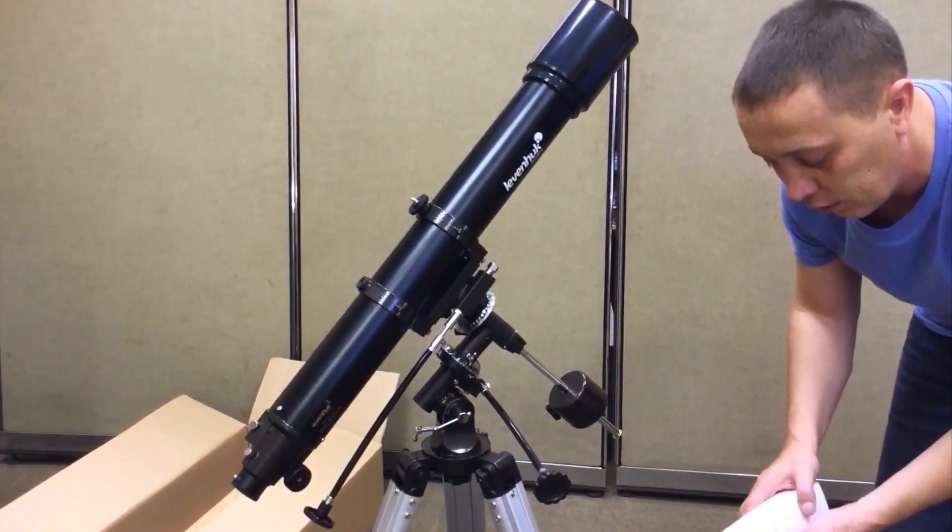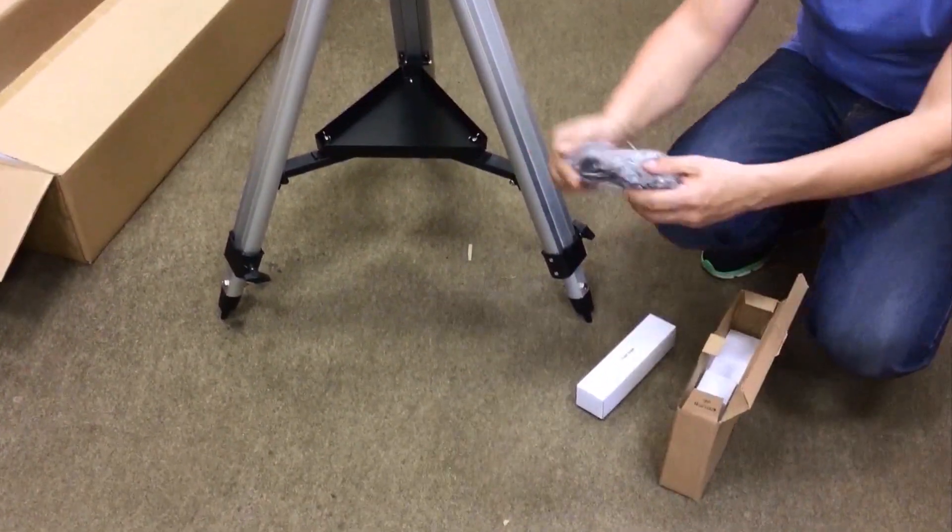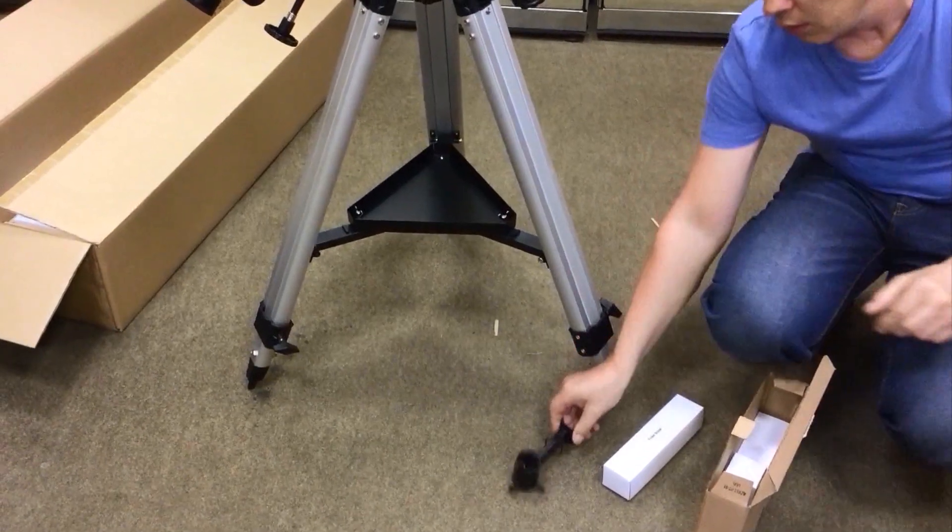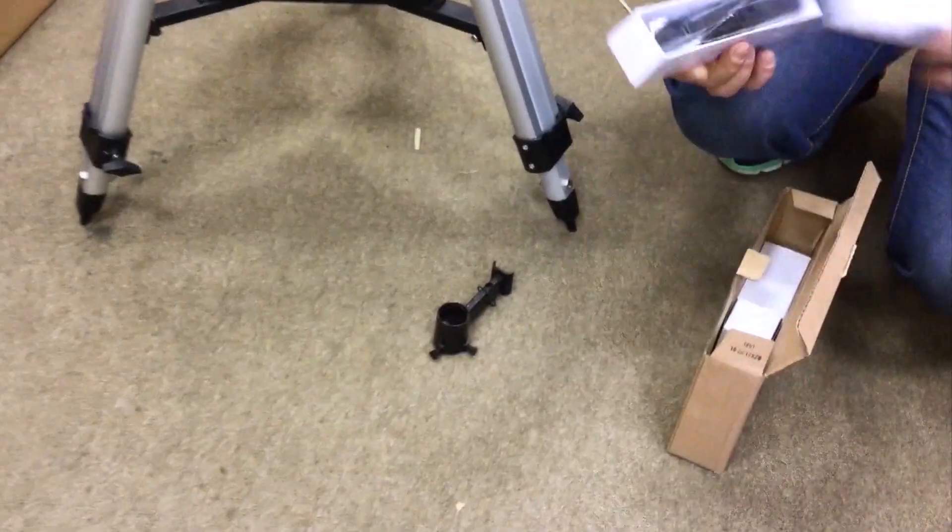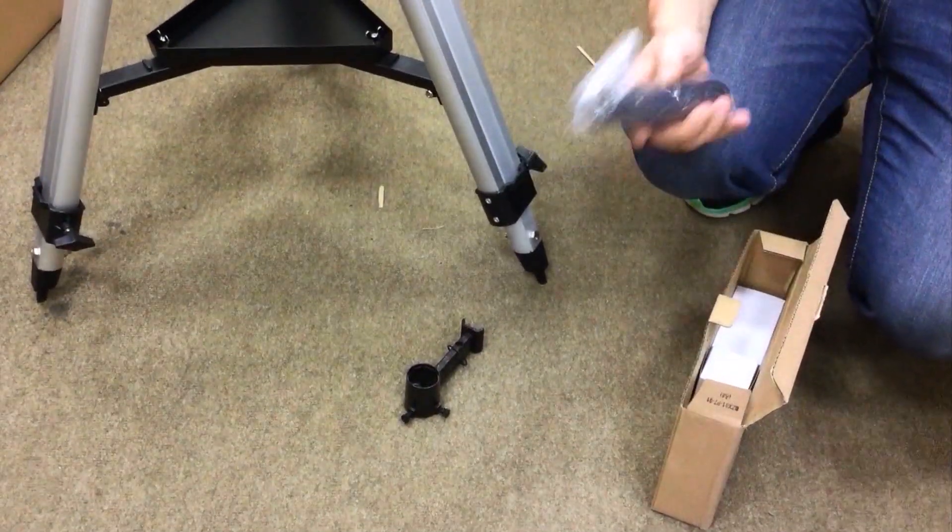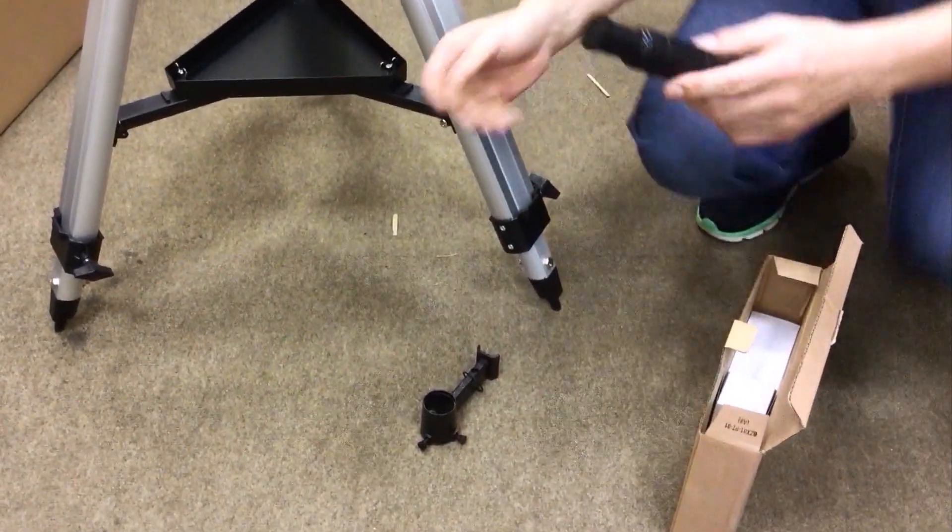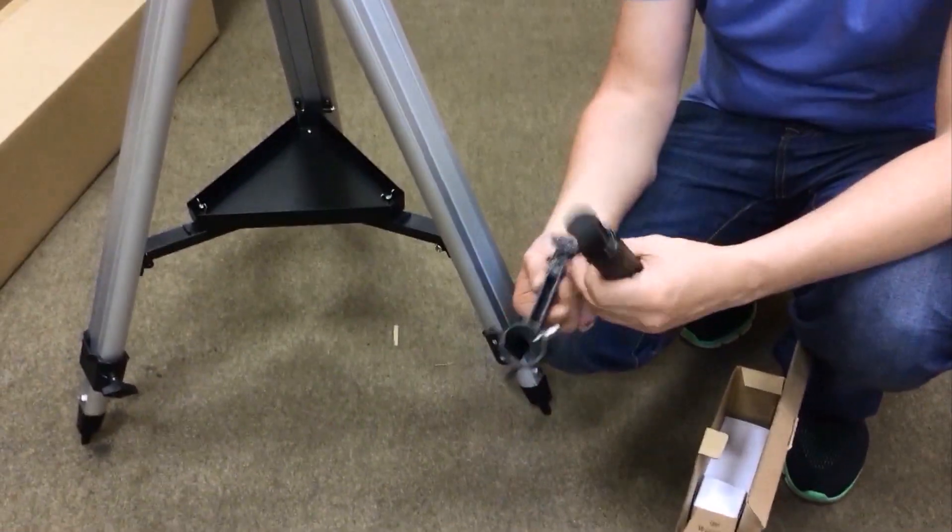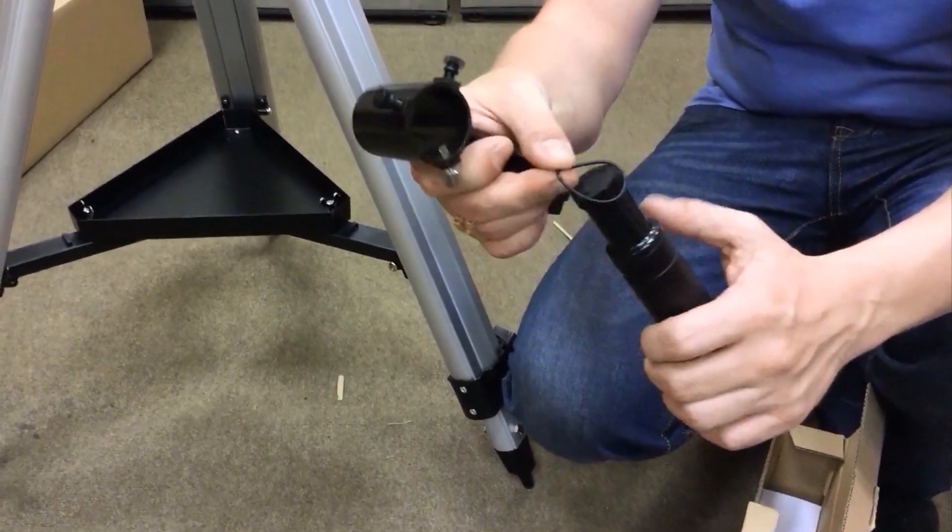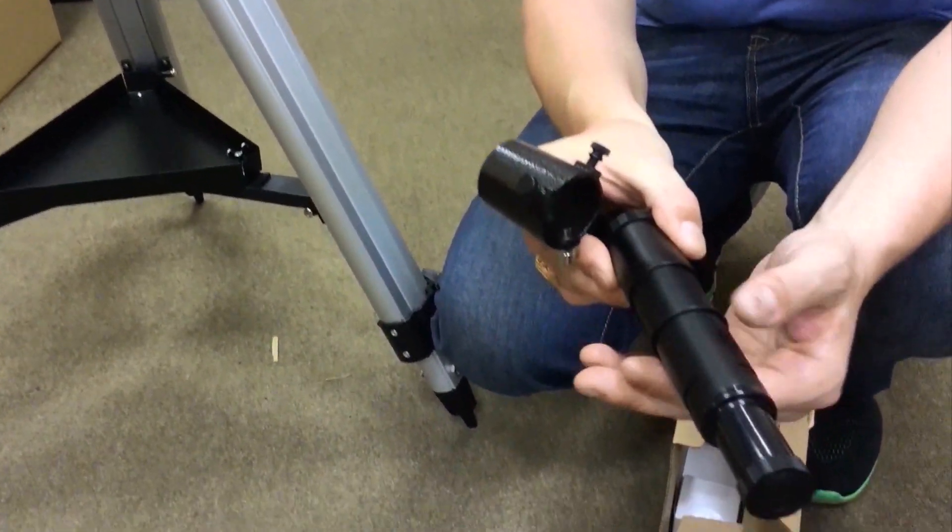Now take the finderscope and its mounting base out of the box with accessories. Note that the finderscope and its base are packed separately. Remove the elastic retainer from the finderscope base and put it on the finderscope. The retainer should be placed in the groove, like this.